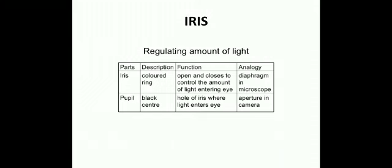The iris and the pupil regulate the amount of light entering the eye. The iris is a colored ring that opens and closes to control the amount of light entering the eye, acting as a diaphragm. The pupil is the black center — the hole in the iris through which light enters — acting as an aperture, similar to a camera.